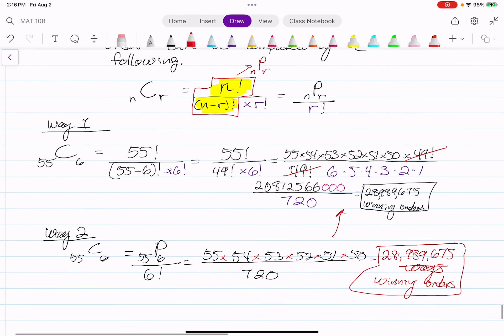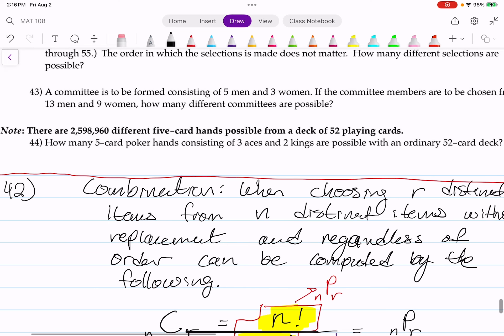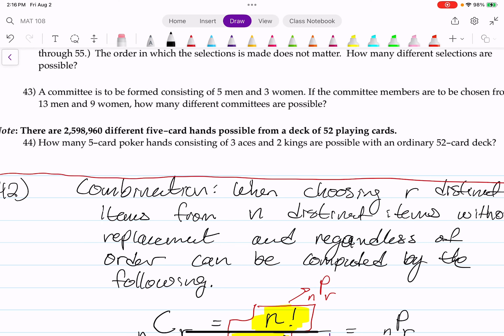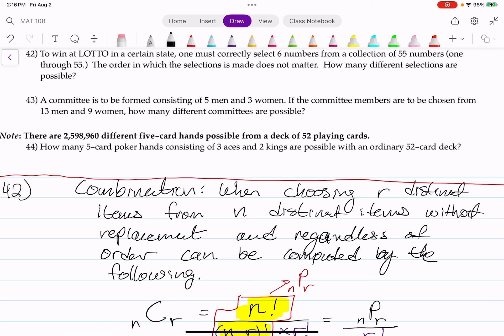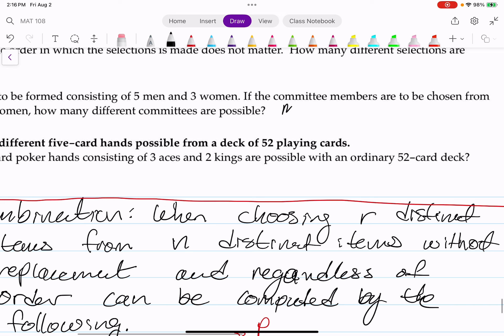Okay awesome. Let's read number 43. Matter of fact, I am going to do 43 and 44 on the actual problem set itself. 43 says a committee is to be formed consistent of five men and three women if the committee members are chosen from a group of 13 men and nine women, how many different committees are possible? Okay so for this one we're choosing men and women.